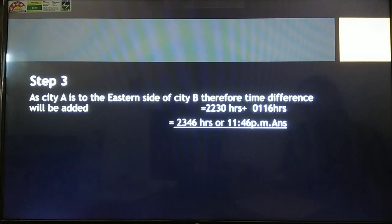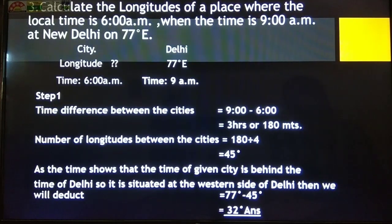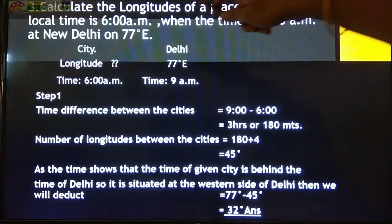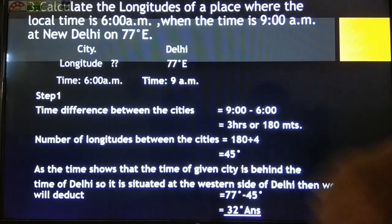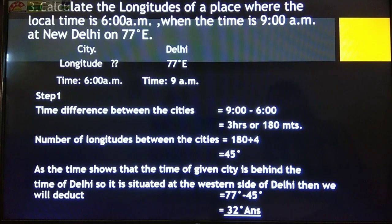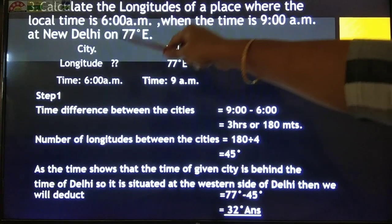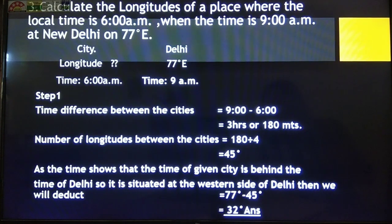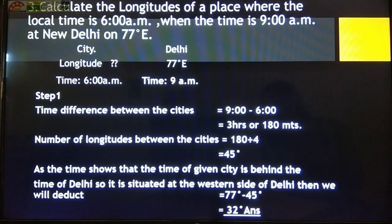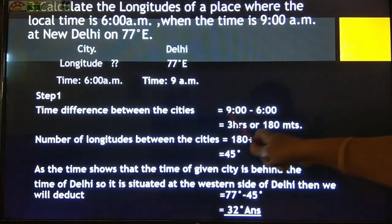The third question is different from the first two. Calculate the longitude of a place where the local time is 6 AM when the time is 9 AM at New Delhi at 77 degrees east. Here we have the timing of both cities, but we have to find out the longitude of the given city. The first step is to find out the time difference. In the previous question we found longitude difference; here we find time difference.